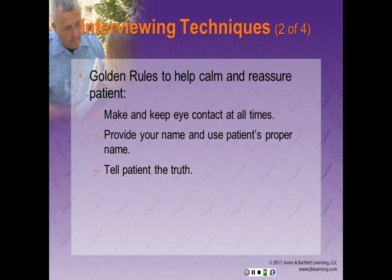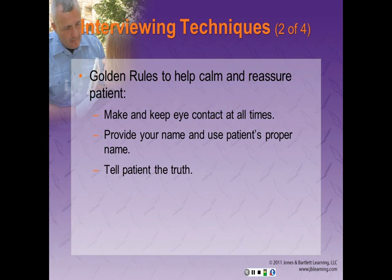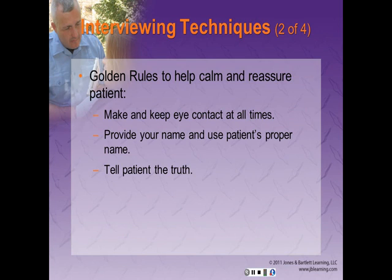When family members and bystanders are present, they may be valuable during the interview. Be sure to allow the patient to answer if they are able and want to, even if well-meaning family members attempt to answer for them. It's okay to tell the bystander, 'Thank you, could you please let the patient answer the question.' You may need to decide if having family and friends nearby will make the patient more or less anxious. Some of the golden rules to help calm and reassure a patient: make and keep eye contact at all times. Provide your name and use the patient's proper name — we want to call our patients Mr. Jones or Mrs. Smith. Avoid slang names like Hun, Sweetie, or Bud — those are not appropriate.